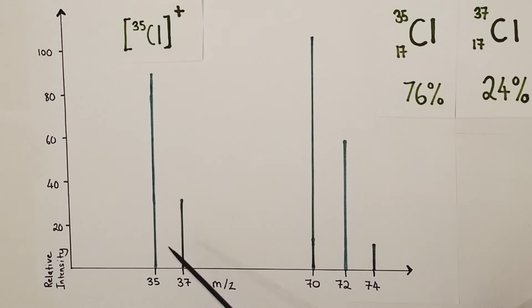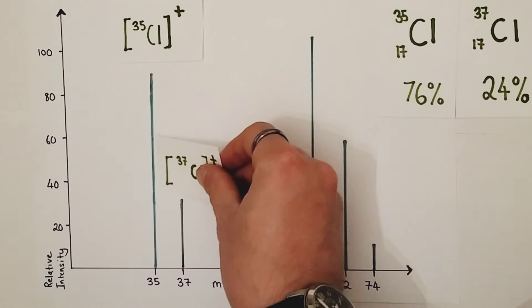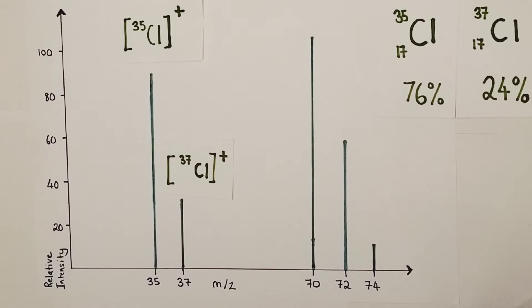The shorter peak has a mass charge ratio of 37 corresponding to a relative mass of 37, and again quite obvious that must be being caused by the other isotope of chlorine present, which is chlorine-37 because it has that mass number of 37 which corresponds with the relative mass value here. So we're going to identify that as being caused by 37Cl+ ions also being produced from the fragmentation of chlorine molecules.